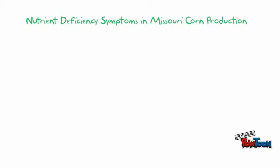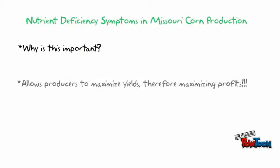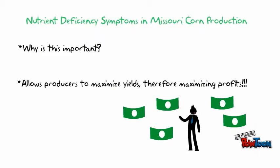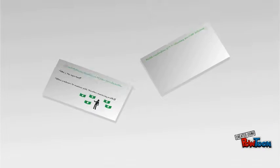Today I am going to talk about the important nutrients in Missouri corn production and how to identify their deficiency symptoms. It's important to have a basic understanding of nutrient deficiency symptoms because recognizing symptoms early in plant growth is the first step to solving the problem so that producers can maximize potential yield, therefore maximizing profits.